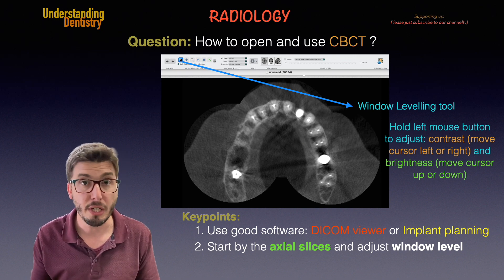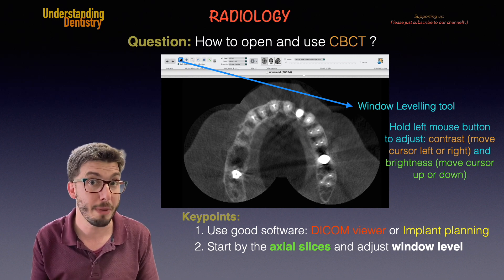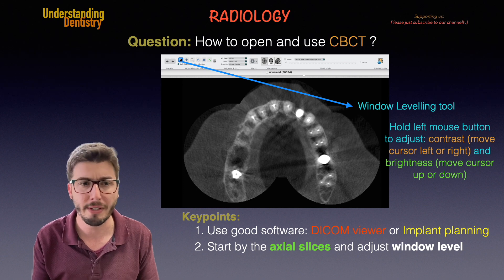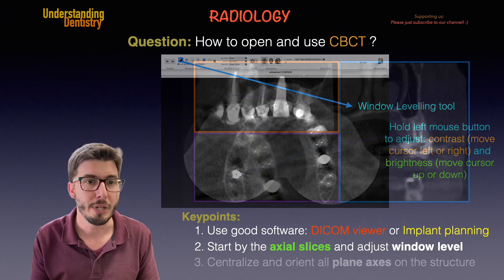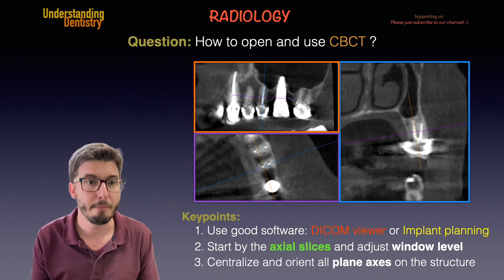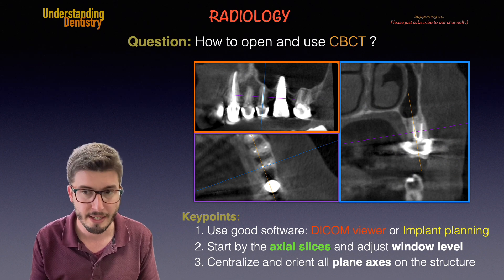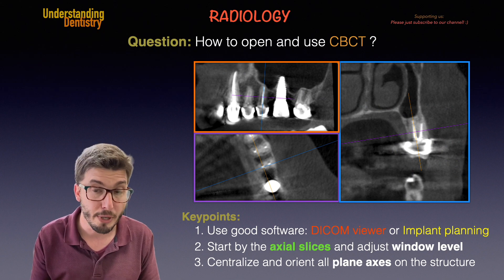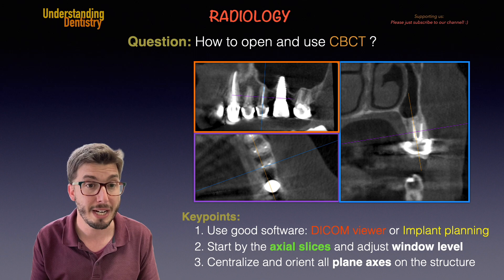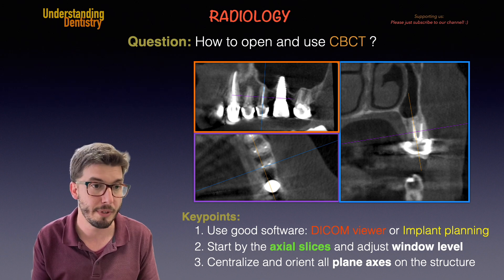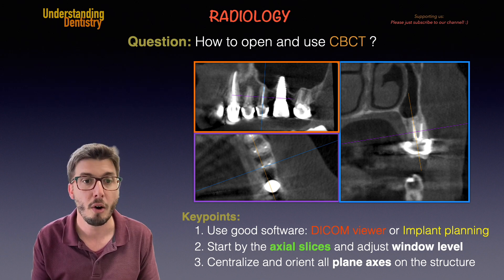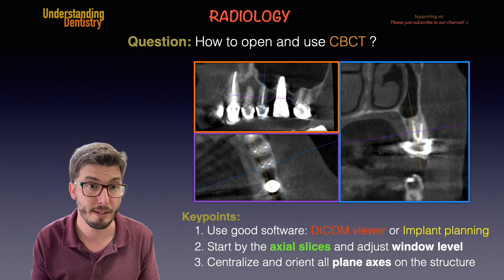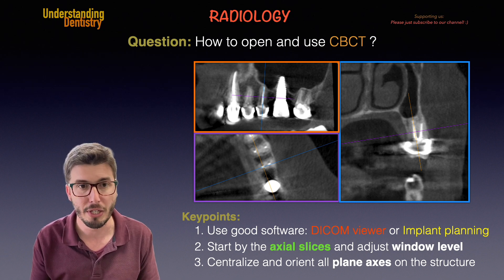You are going to find the main conditions you want to diagnose on the multiplanar reconstruction. The next step is to open the 3D MPR — the multiplanar reconstruction. The third key point is that we need to centralize and orient all axes of the planes on the anatomical structure that we want to assess.